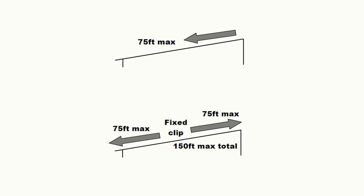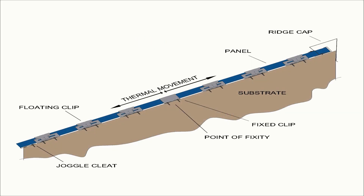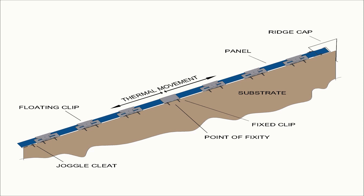For a roof longer than 75 feet using a mechanically seamed panel with clips limited to plus or minus one inch, the point of fixity would be established mid-span. This creates the necessary drag load resistance and a lock point in the center of the roof, essentially cutting total thermal movement in half — 75 feet expanding uphill to the ridge and 75 feet down to the eave, allowing a total roof length of 150 feet.